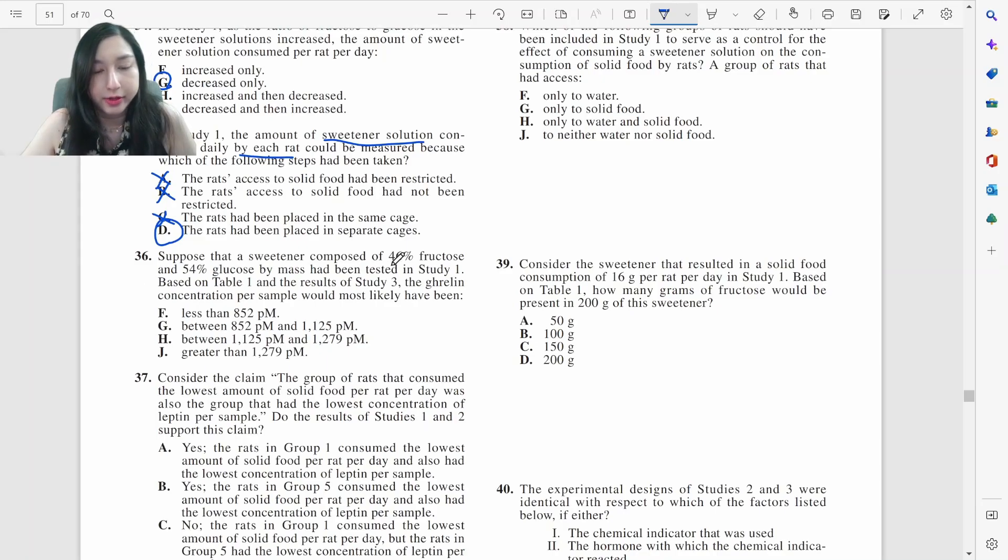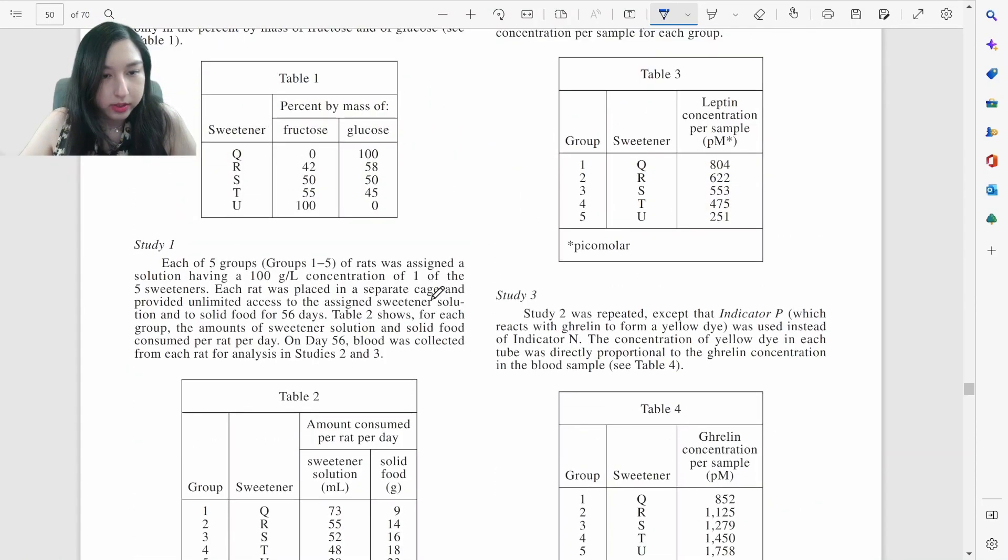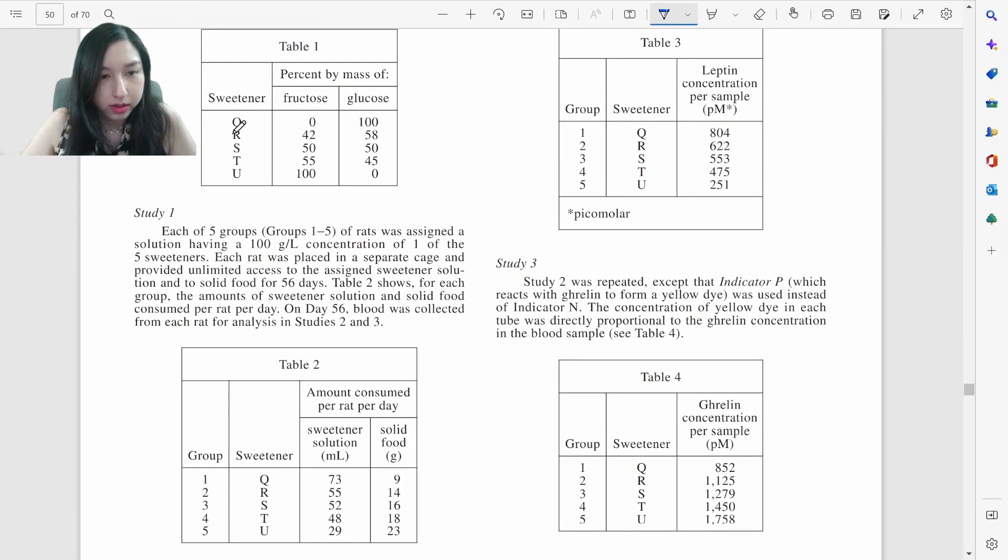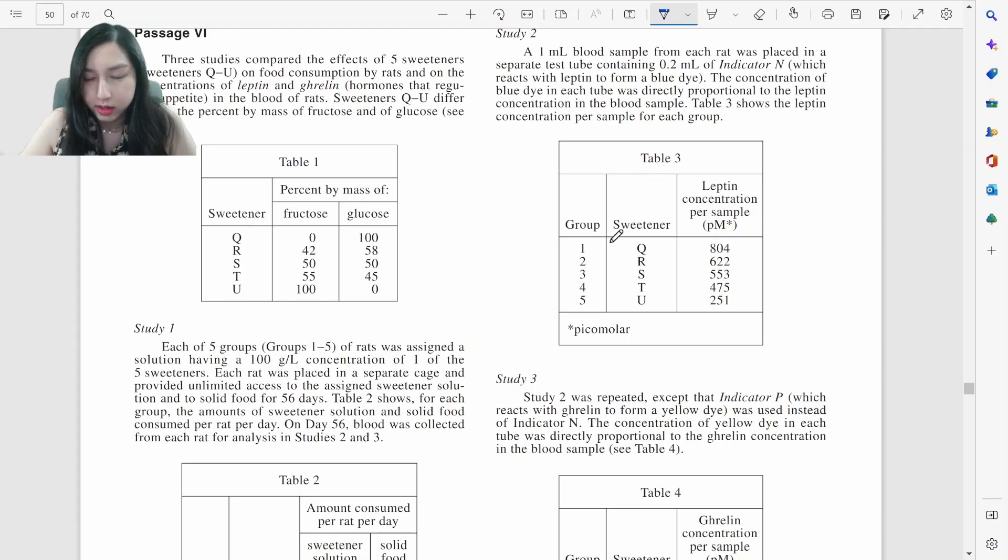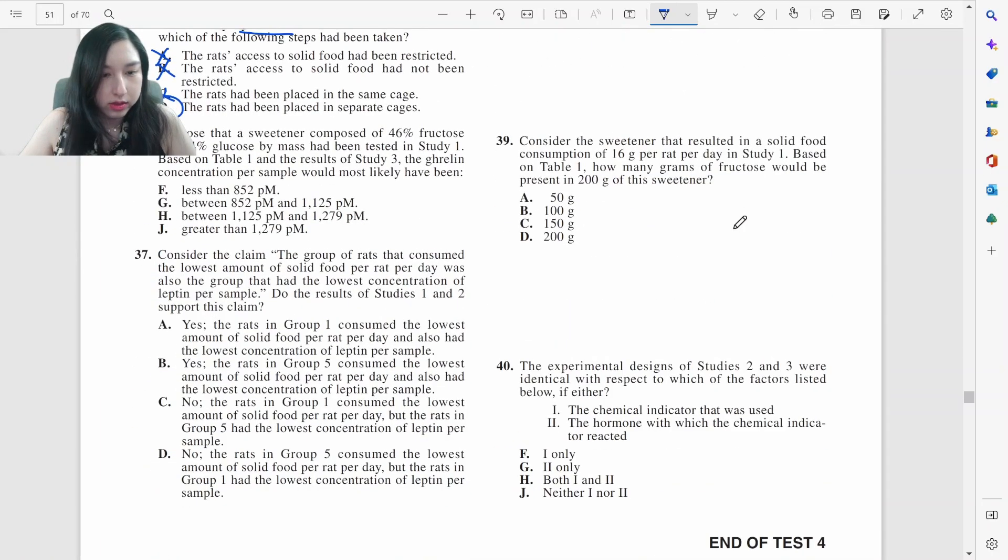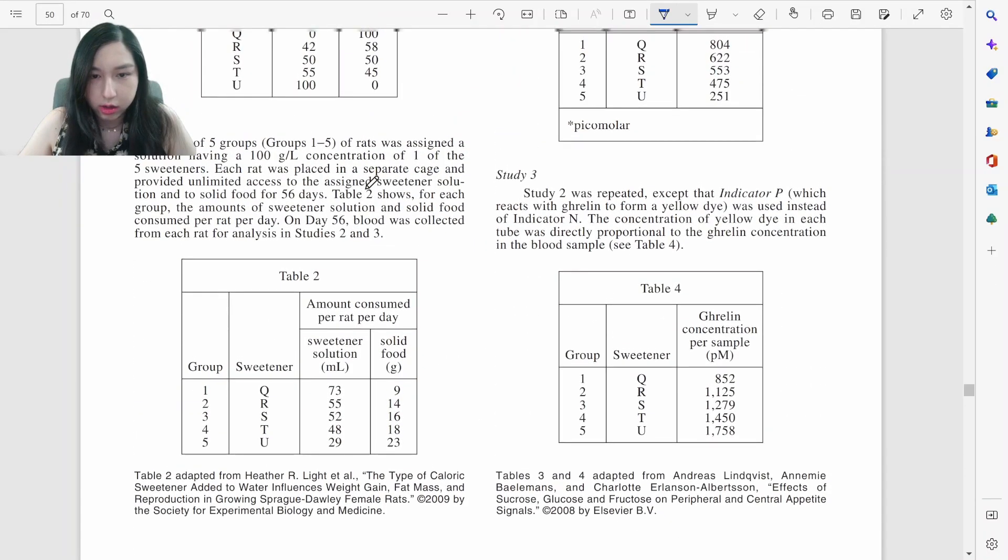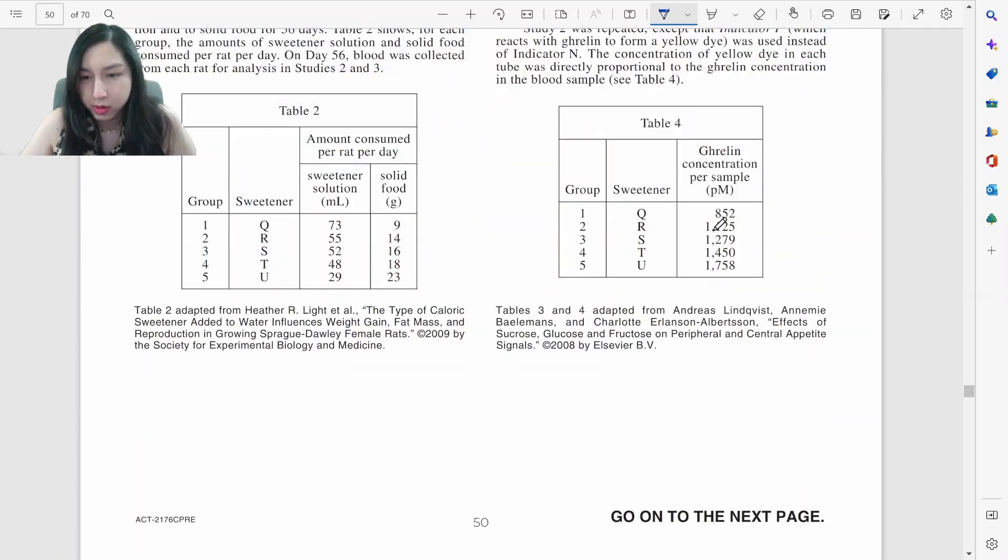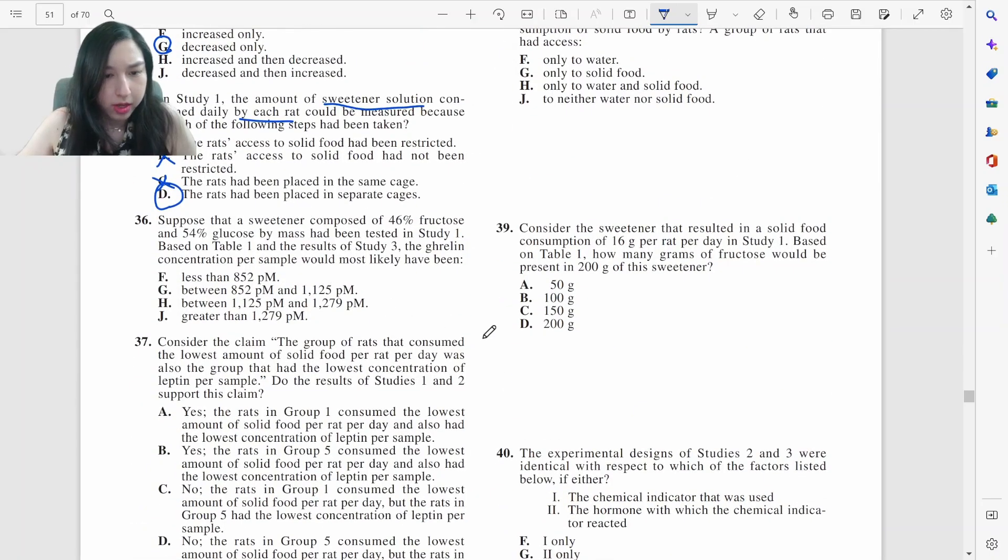Suppose there are sweetener composed of 46% fructose, 54% glucose, based on table one and results of study three. So what's this? 46% fructose. That would be in between R and S. So study three, right here, in between R and S would be between 622, 553, 622, 555. Oh, study three is this one. Study three in between R and S. 1, 1, 2, 5, 1, 2, 7, 9. That would be H right here.